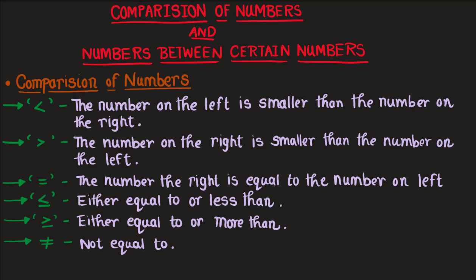Our first concept is comparison of numbers. In order to learn comparison of numbers, we first need to know about some signs. There are six different types of signs and we are going to learn each of them.